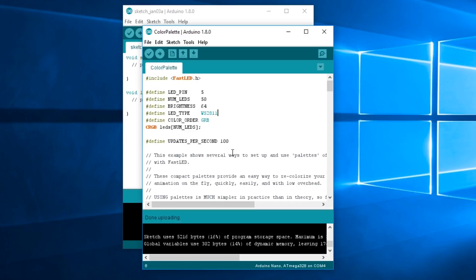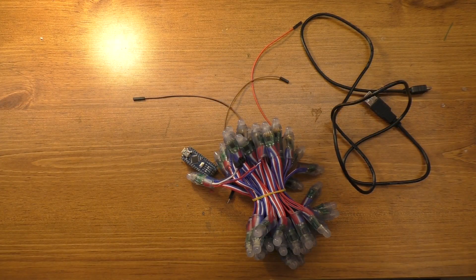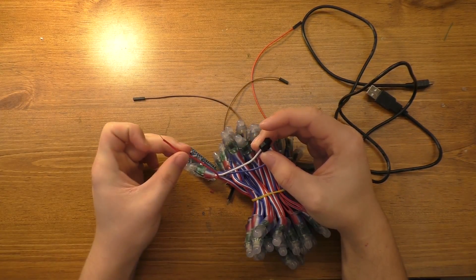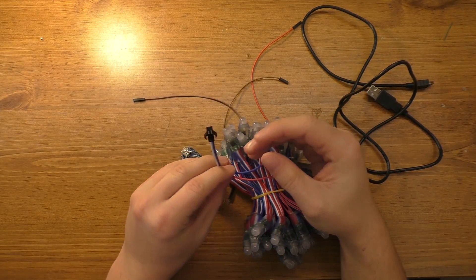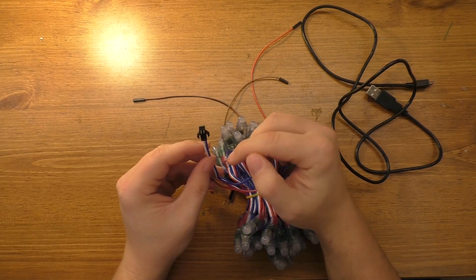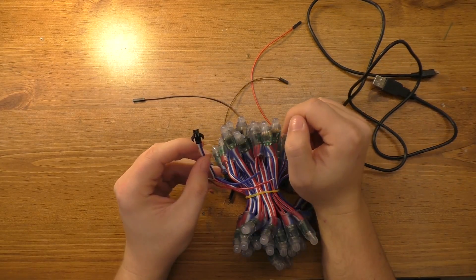And we're going to go ahead and hook this up now. So this particular string of LEDs, we have four wires coming off of it. We have the red wire, which is plus five volts. The two blue wires are both connected to each other and they're both ground. And then that white wire is the data wire.